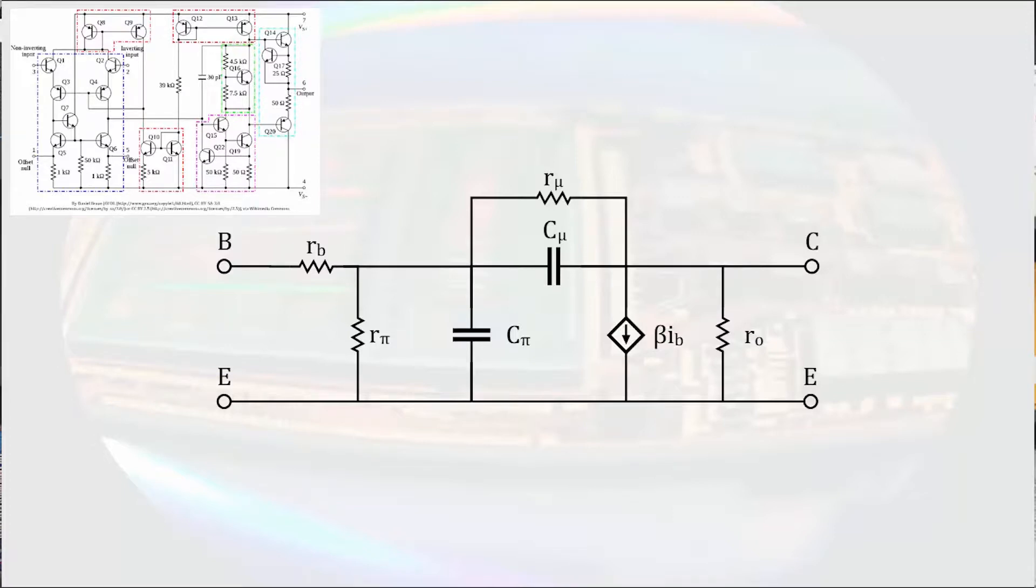That makes for a lot of frequency-dependent terms. But one of the main obstacles that needs to be overcome when designing an operational amplifier is that of stability. That is why it is necessary to provide negative feedback in an operational amplifier circuit. With a very high gain, and with the presence of so many frequency-dependent components, a simple way to control the frequency behavior of the entire amplifier is to set it up so there is a dominant corner frequency that occurs at a very low frequency.